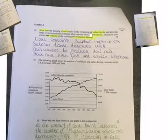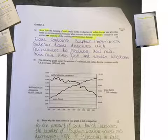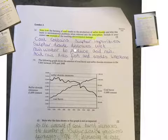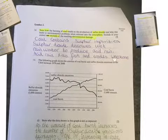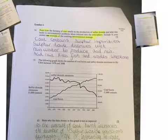Suggest how burning coal results in the production of sulfur dioxide and why this leads to environmental problems when released into the atmosphere. Coal contains sulfur impurities, sulfur dioxide dissolves with rain water to produce acid rain, acid rain kills fish and erodes limestone. That's a brief overview which could get you three marks.